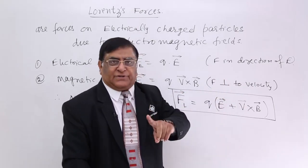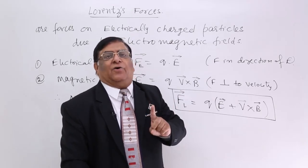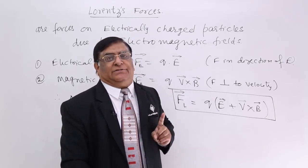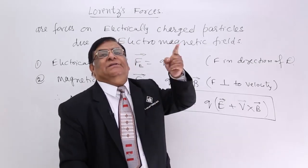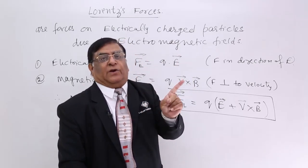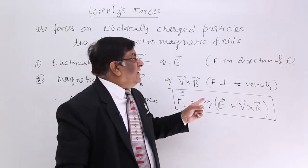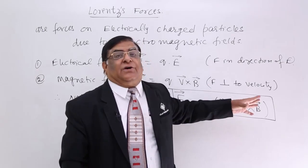Magnetic field, we have studied, it cannot accelerate or decelerate, it can only change direction, it acts normal to the direction of velocity and it keeps changing its own direction with reference to velocity. It always remain at right angle to velocity, therefore, it is able to make them in circular motion.